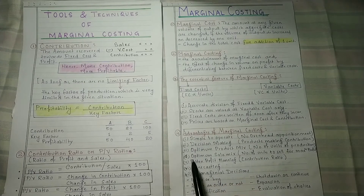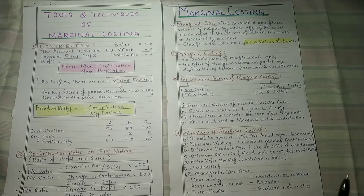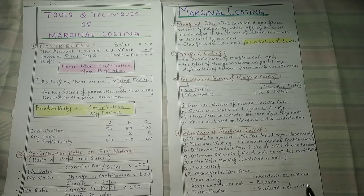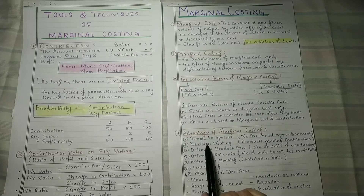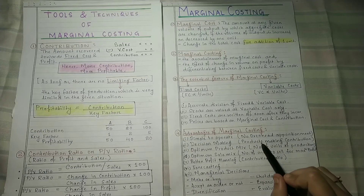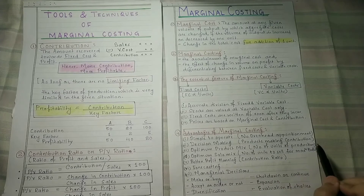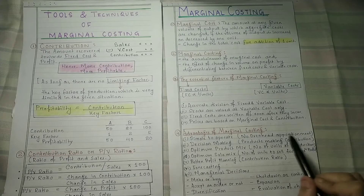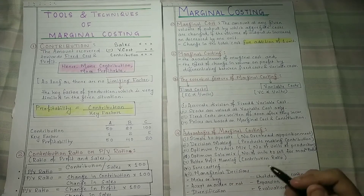The next point is the advantages of marginal costing. Why are we studying it and what are the benefits? The very first advantage is that it is very simple to operate. In absorption costing we had to do apportionment and other allocations, but in marginal costing we do not have to do all that. So the operation is very simplified.